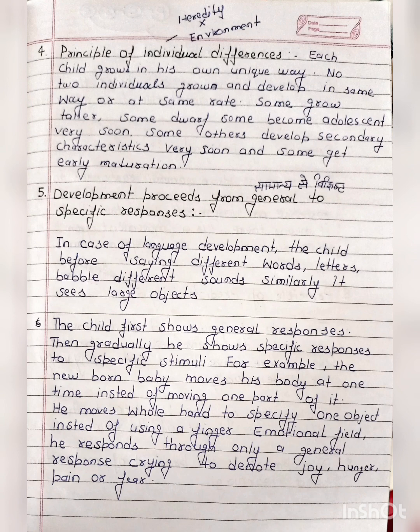The fifth principle is that development proceeds from general to specific responses. In the case of language development, the child before saying different words or letters, babbles different sounds. The child first shows general responses, then gradually shows specific responses to a specific stimulus. For example, the newborn baby moves his whole body at one time instead of moving one part of it.